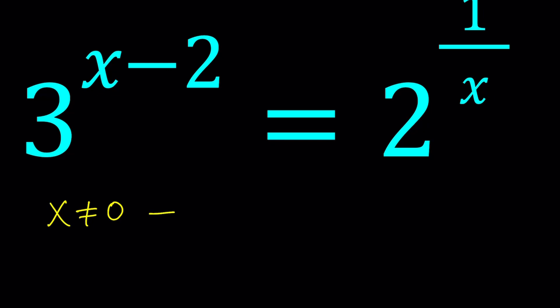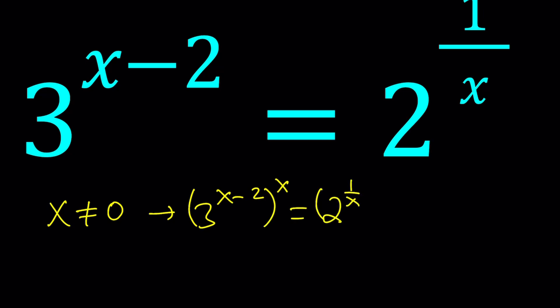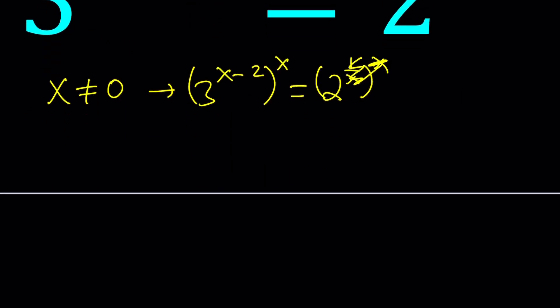Under this condition, we can go ahead and raise both sides to the power x, which is going to simplify our expression a great deal, because the x and 1 over x are going to cancel out. We're going to have a number on one side, which is good. And here, we multiply the exponents, so that's going to give us 3 to the power x squared minus 2x.